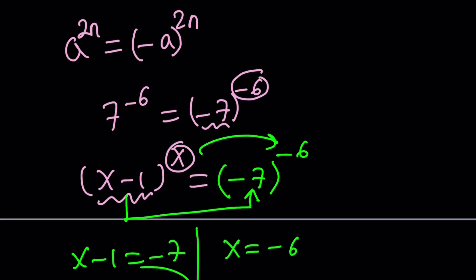So they agree on the same solution. Therefore, x equals negative 6 is a valid solution. Make sense? Is that the only solution? Something to talk about, right?